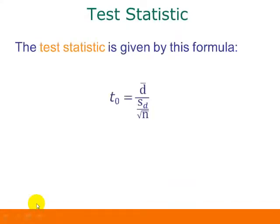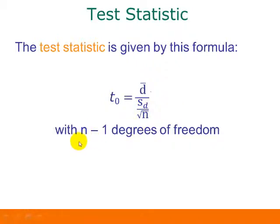The test statistic is based on a T distribution, so it's T sub naught. It looks a lot like the test statistic for a single population mean: D-bar divided by S sub D over the square root of n. Since we're using the T distribution, the degrees of freedom is n minus 1.